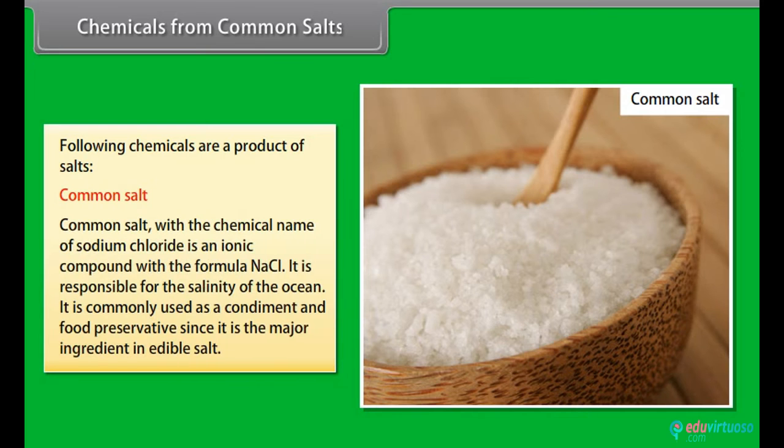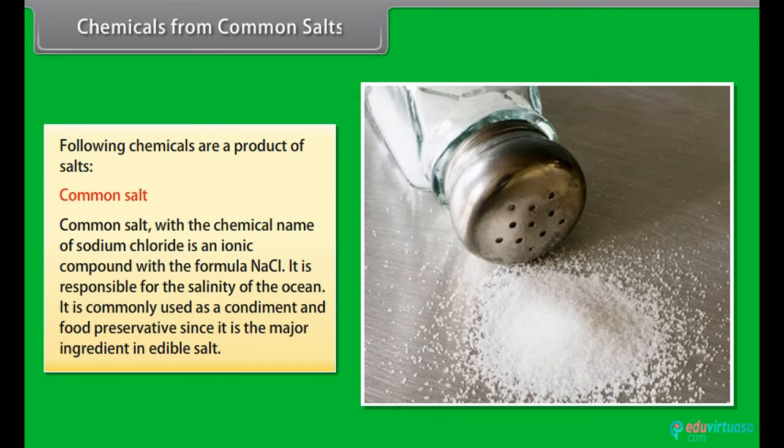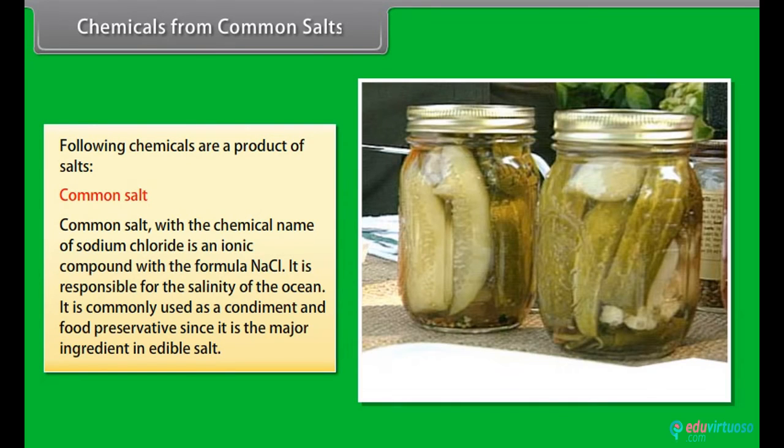Chemicals from common salts. The following are some of the chemicals produced from salts. Common salt. Common salt with the chemical name of sodium chloride is an ionic compound with the formula NaCl. It is responsible for the salinity of the ocean. It is commonly used as a condiment and food preservative since it is the major ingredient in edible salt.